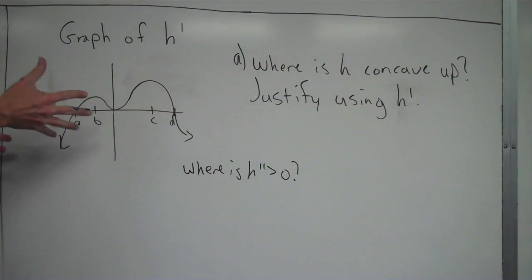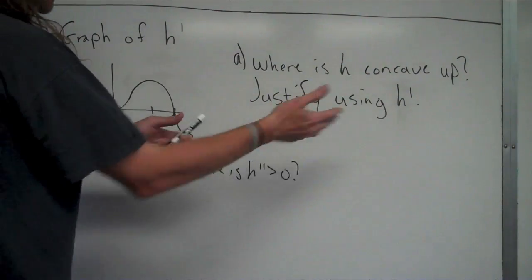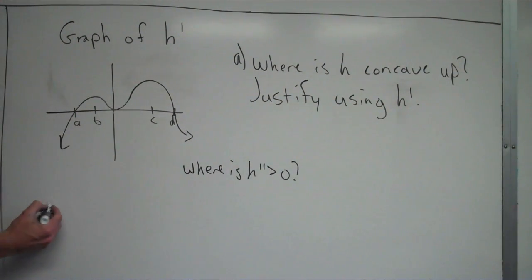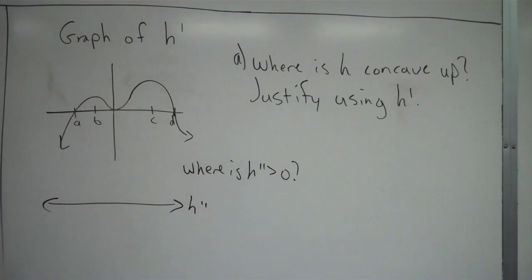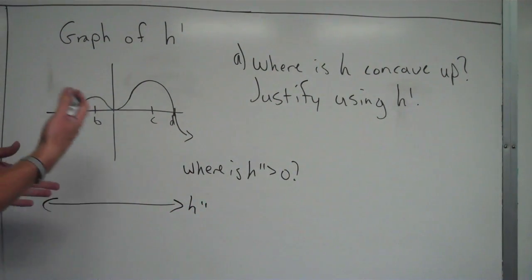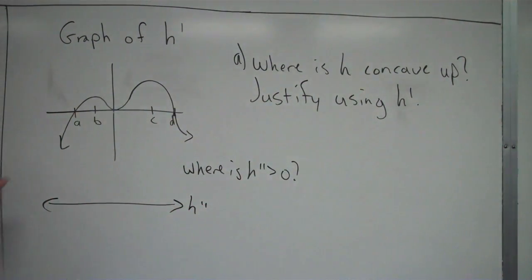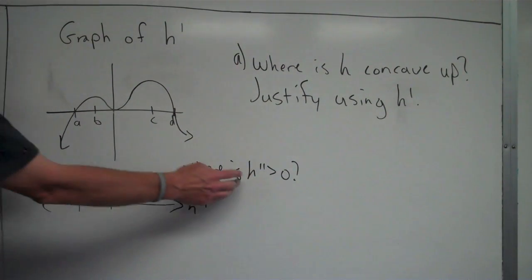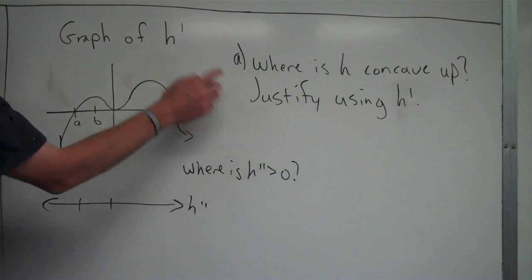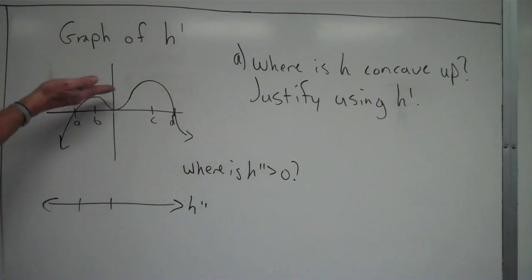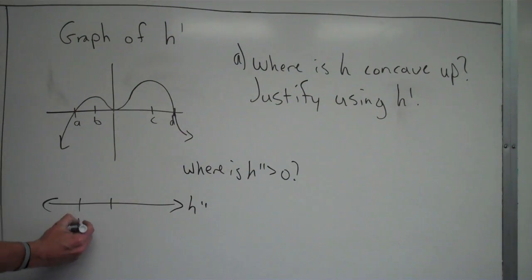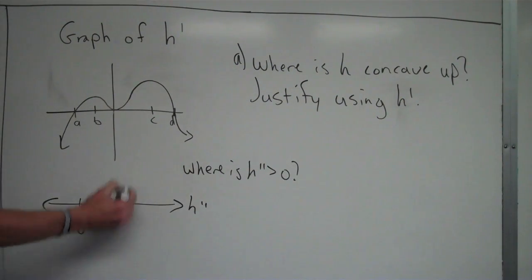Most people can just look at this graph and read it to answer the question. Some people might prefer to make an H double prime sign chart from this graph. To do that, I'd put the zeros of H double prime on here. To find where H double prime is zero, I look for where the slope is zero — and that would be at B, at zero, and at C.